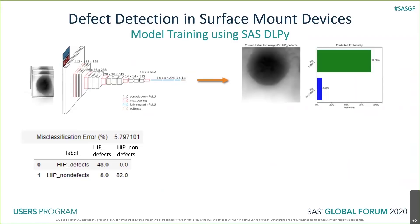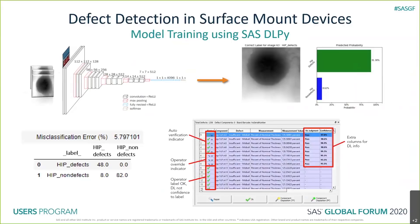From the validation data set, 48 of the defects were classified correctly as defects. From the non-defects, 82 were classified correctly and eight were classified incorrectly. An example on the right-hand side shows a HIP defect classified correctly with 91% probability. Moving forward, the idea is that operators would have the ability to override what the deep learning model suggests after scoring — giving enough flexibility to change things if needed — while still greatly enhancing operator productivity.